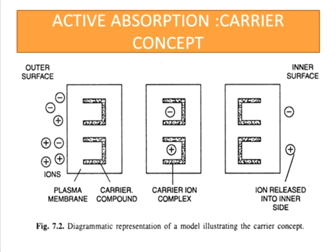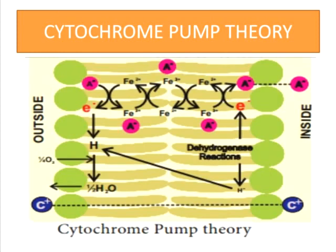First, we will discuss the cytochrome pump theory. The assumptions of this theory are: absorption of anion is independent of absorption of cation; the mechanisms of absorption of cation and anion are different; an oxygen concentration gradient exists; and the cytochrome system is involved in the uptake of anion, which is an active process.